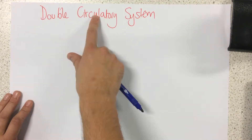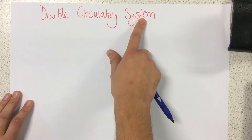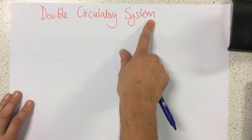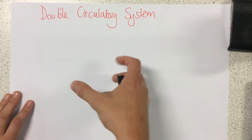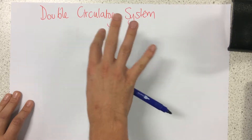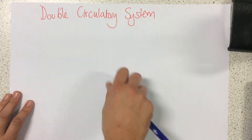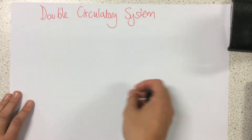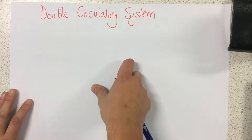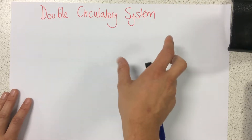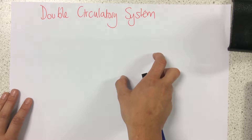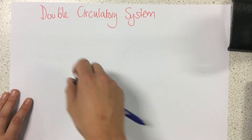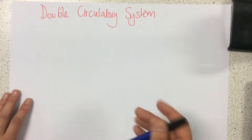I'm going to talk to you about the double circulatory system. The double circulatory system is how we pump blood to every single cell in the body in order to deliver glucose and oxygen for the process of aerobic respiration so it can release energy, and also remove all the waste products like urea and carbon dioxide.